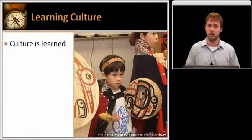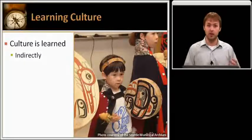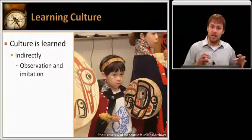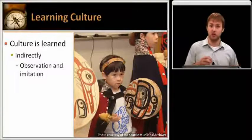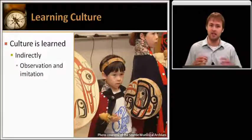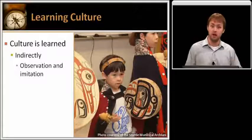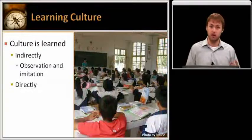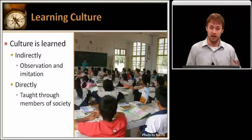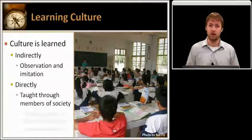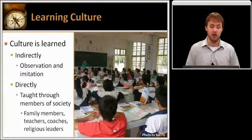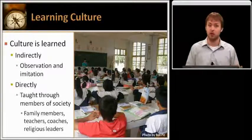Culture is learned — this is very important to understand. Culture can be learned indirectly by imitation and observation. Children, for example, imitate their parents and observe the language used by their parents, imitating that language at a very young age, often before they are ever taught in school the language of that culture. You can also learn culture directly, as it is taught through members of that culture — coaches, religious leaders, members of family, and especially teachers. So culture is learned both indirectly and directly.